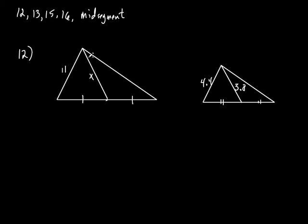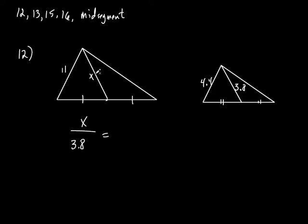So what do we do? We have a rule that says the medians are in proportion with the corresponding sides of the triangle. It means if I compare the medians to each other — I'm going to go X to 3.8, set it equal to something. Almost this whole entire test is setting a fraction equal to another fraction, setting up those proportions. So if I go X to 3.8, what do I do with those other two sides? 11 to 4.4. That's right — 11 to 4.4.